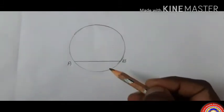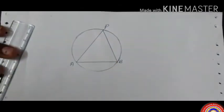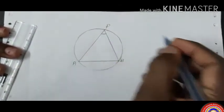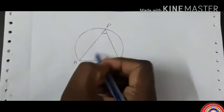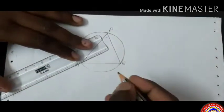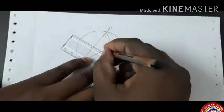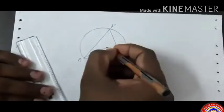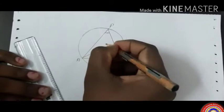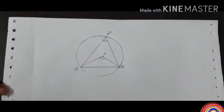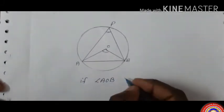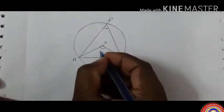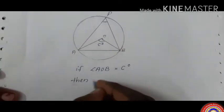AB divides the circle into two unequal parts. First, draw an angle P from the endpoints of the chord AB. How do we get the angle at P? It depends upon the central angle formed from the chord AB. We join the central angle AOB. If angle AOB equals C degrees, then angle P equals C/2 degrees, which means it is half of the central angle.